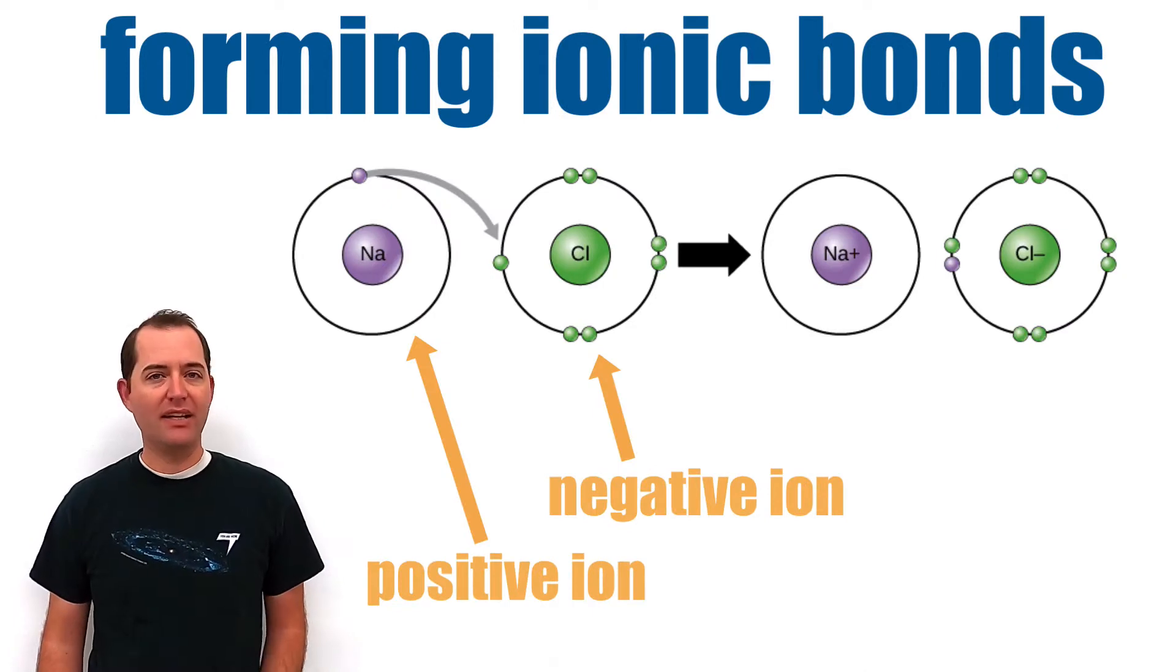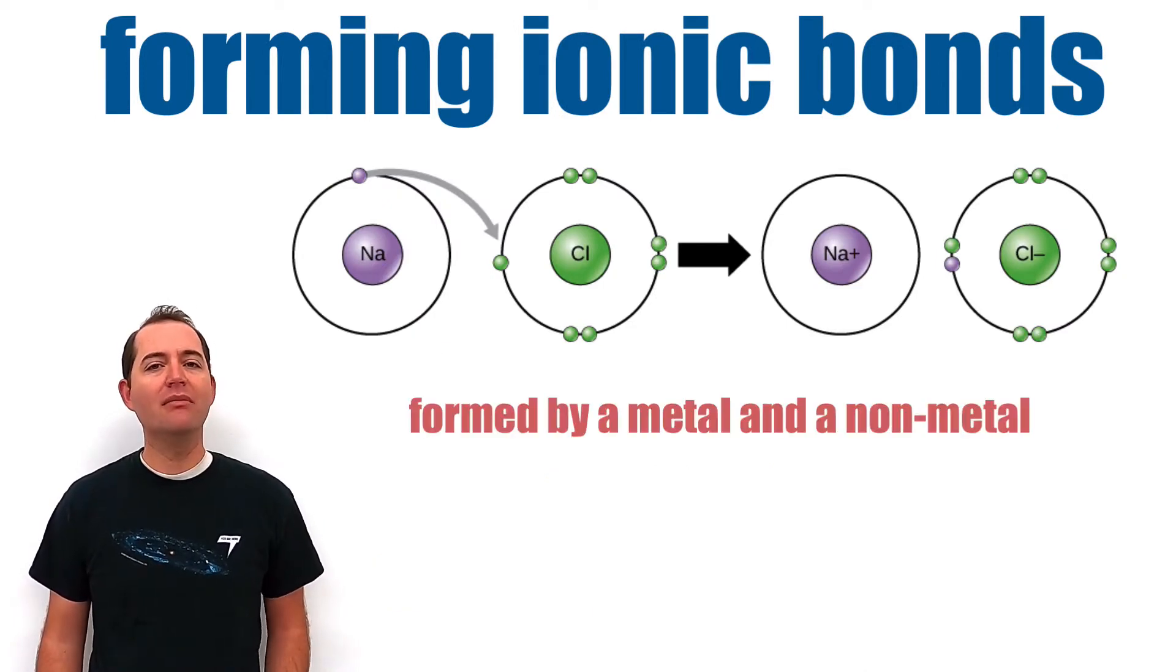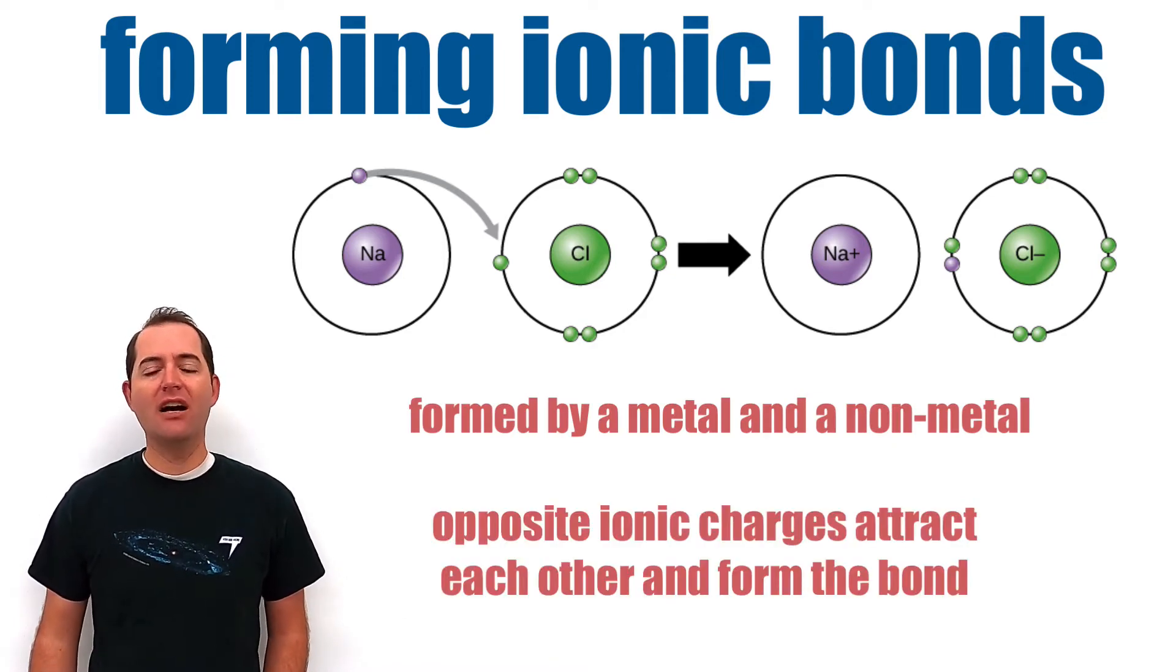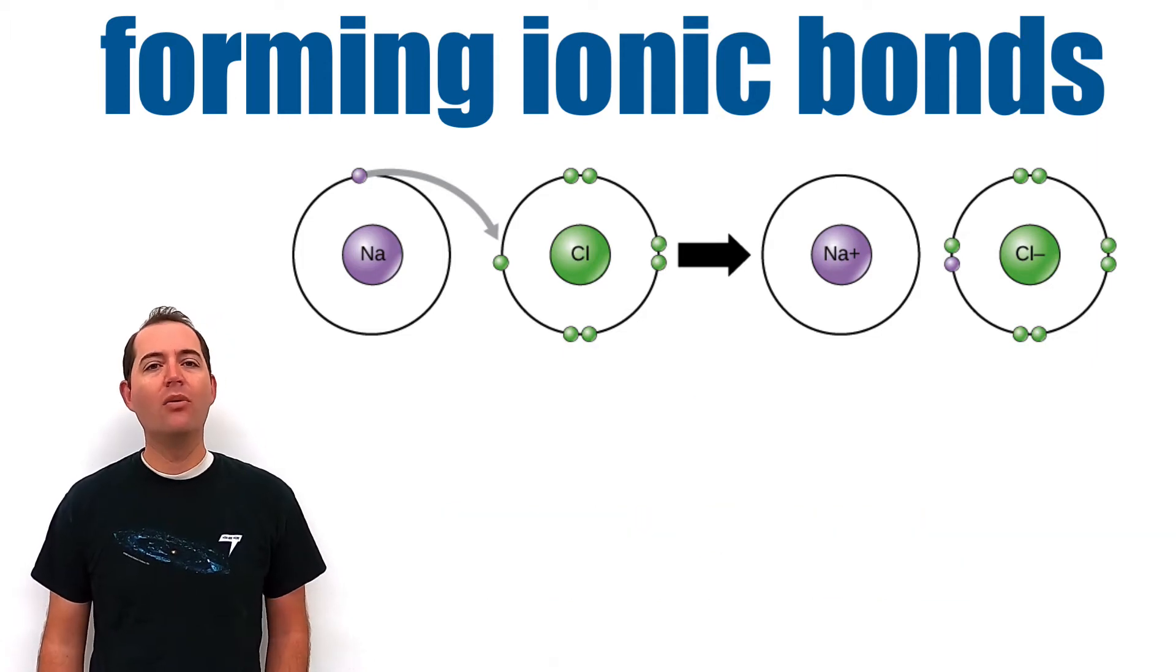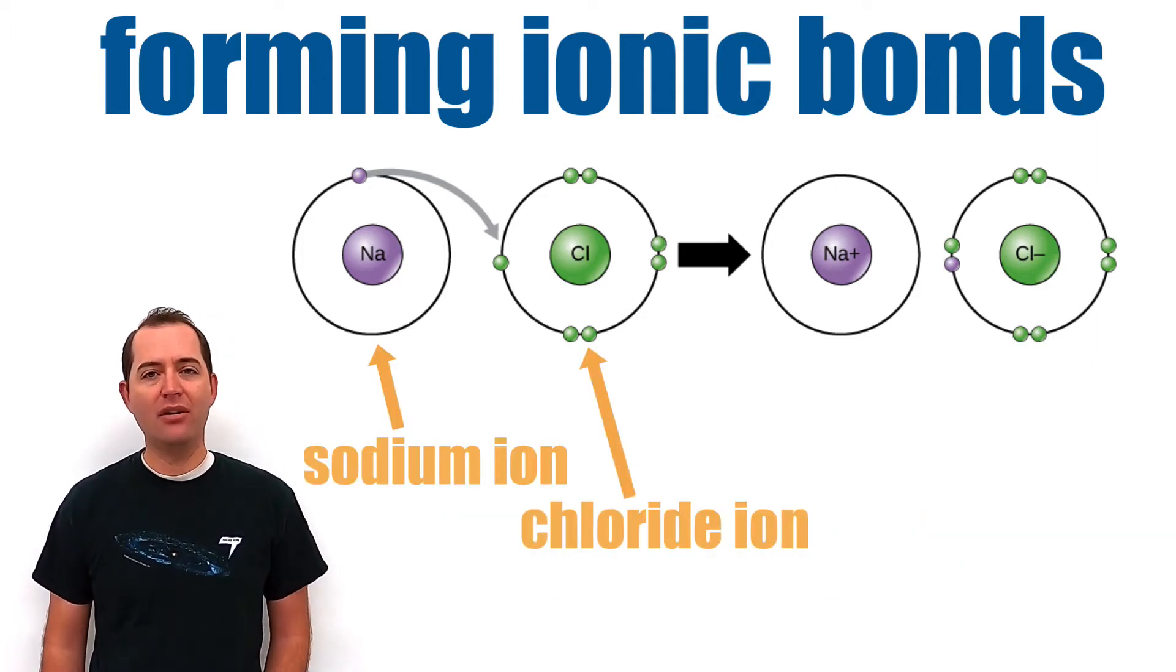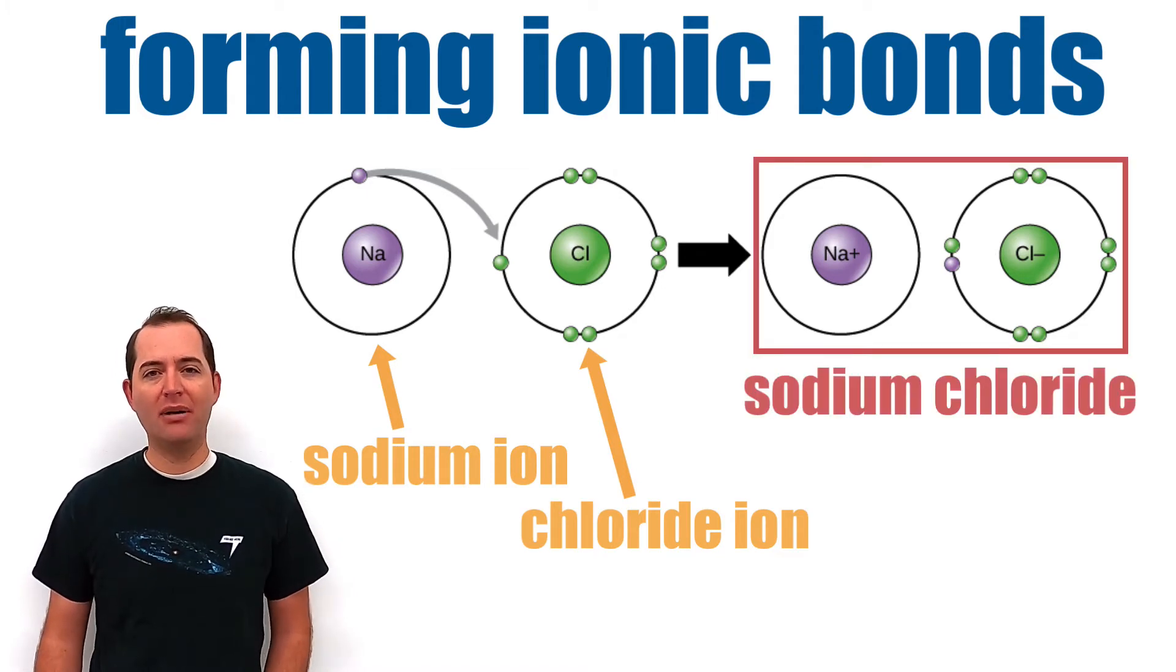These positive and negative ions can form ionic bonds. These form with a metal and a nonmetal, and these ions form because of the opposite charges which attract each other. One sodium ion and one chloride ion can form a sodium chloride compound.